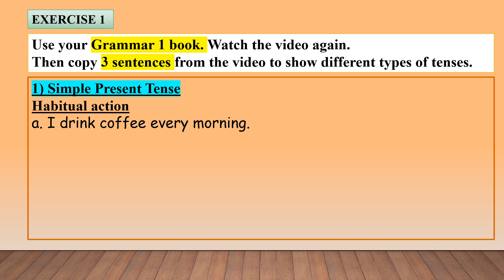I want how many sentences? I want three sentences. So afterwards you're going to watch the video again and you're going to write A, B, and C — three sentences for simple present tense, habitual action.